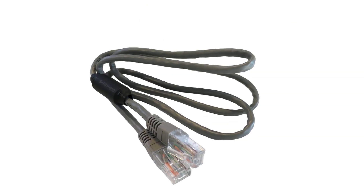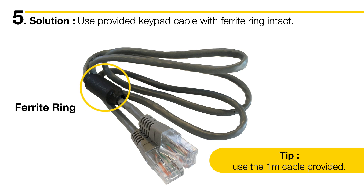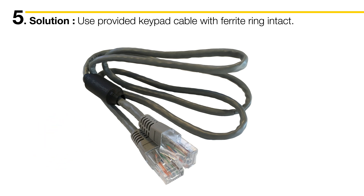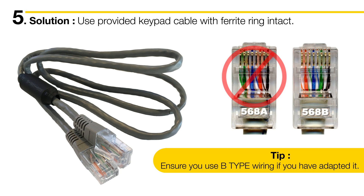The last common cabling issue is the keypad cable. Make sure you've used the one metre keypad cable provided and kept the end with the ferrite ring intact. The easiest way to access the coloured wires in the keypad cable is to cut and strip the cable. But if you've wired up your own female connector or tried to use your own keypad cable, you must use B-type wiring for the connectors, or your network communication will fail.